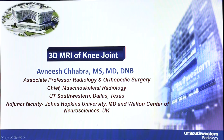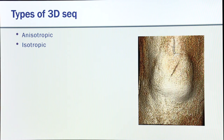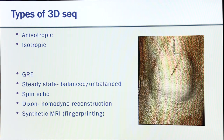Let's check out the knee first. I'm going to start with the knee joint — this is a presentation I'm giving at RSNA this year, I gave one last year also. There are different types of 3D sequences: isotropic means the same resolution in all three planes as acquired, not interpolated. Anisotropic is easier, where you can do 0.6 by 0.6 and the other plane is about 3 millimeters. We do isotropic so it can be reconstructed in any plane. Different approaches include gradient echo, steady state, spin echo, Dixon, or synthetic MRI.